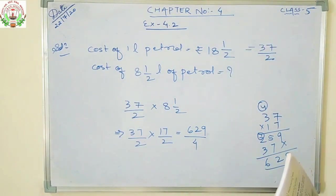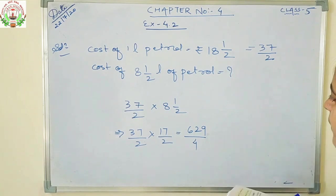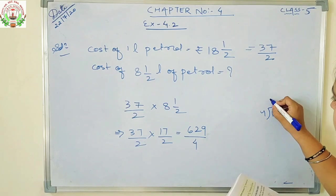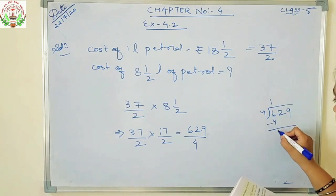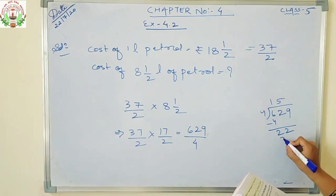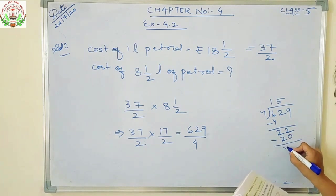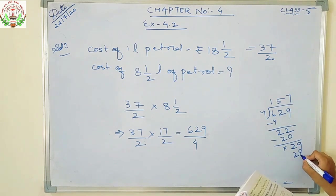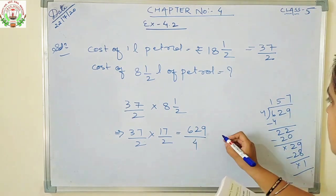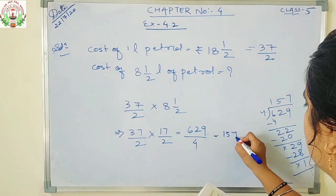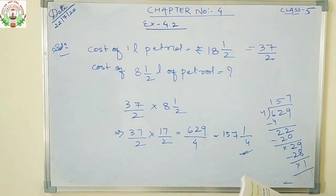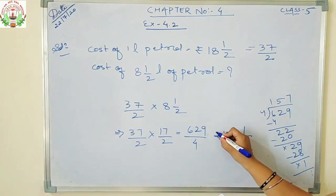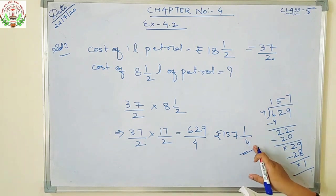This can be further simplified. Divide 629 by 4: 4 ones are 4, 6 minus 4 is 2; bring down 2 — 4 fives are 20; bring down 9 — 4 sevens are 28. So the answer is quotient remainder upon denominator. The cost of 8 and 1 by 2 litres of petrol is Rs. 157 and 1 upon 4.